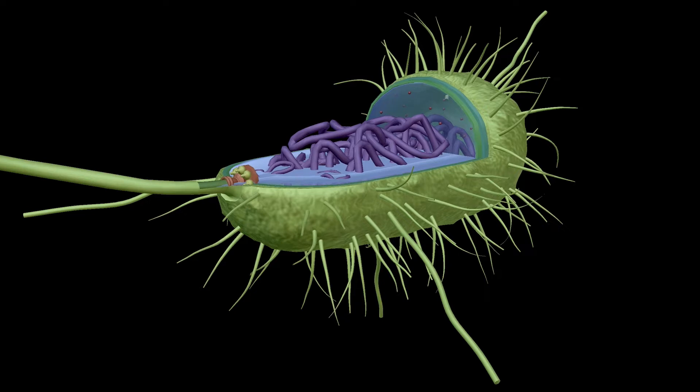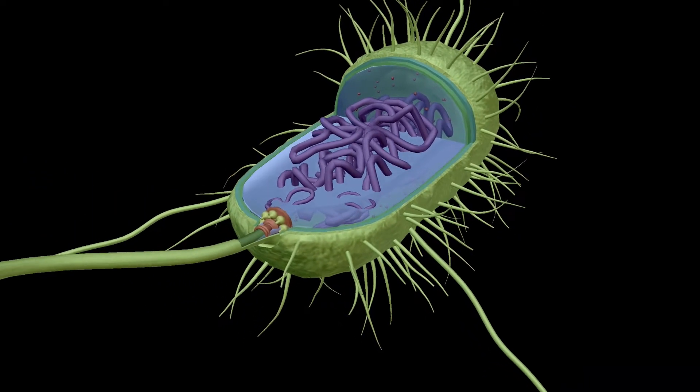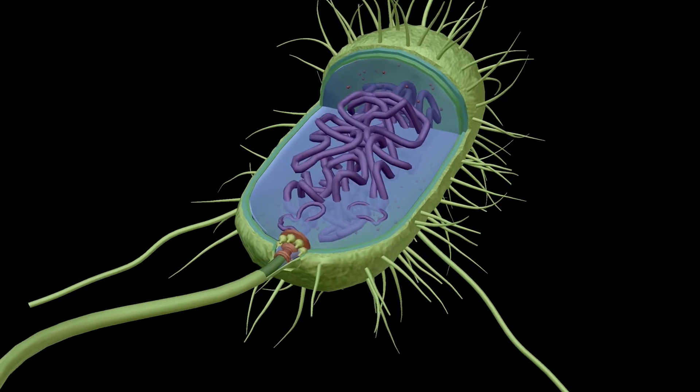When we go back about 3.6 billion years ago, the only cells around were single-celled organisms that looked a lot like this bacteria. It would take another 1.5 billion years for cells like the animal cell we talked about in a previous episode to emerge.